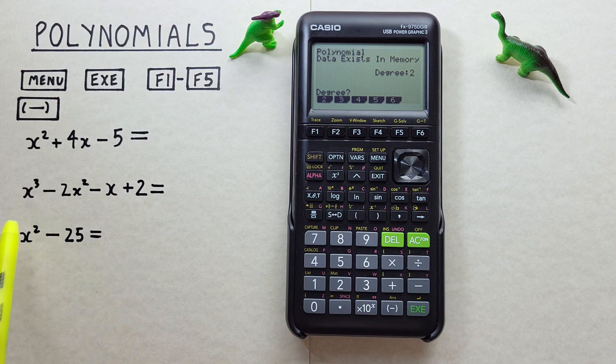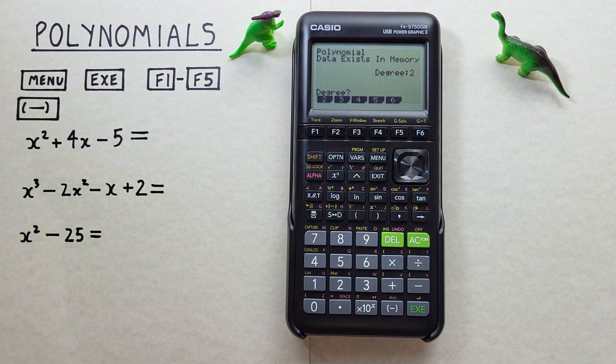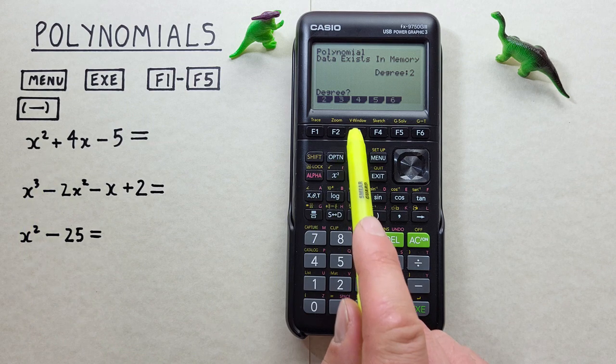Let's look at another example. Let's look at this. In this example our largest power of X is 3, so we'll choose a degree of 3 for this one.